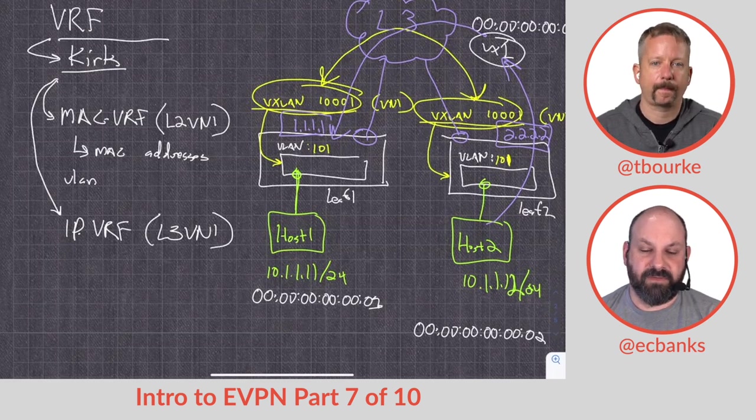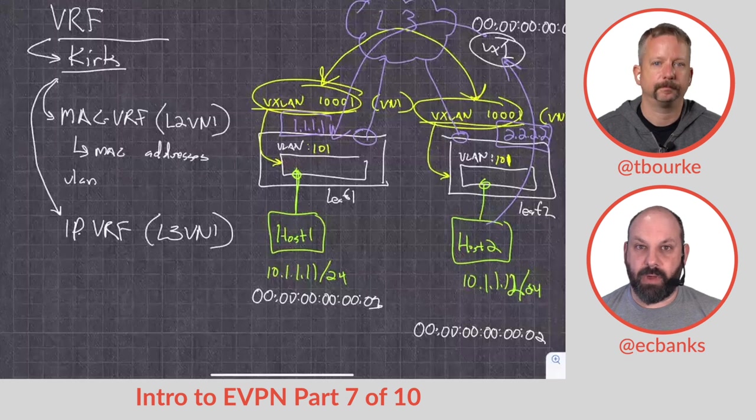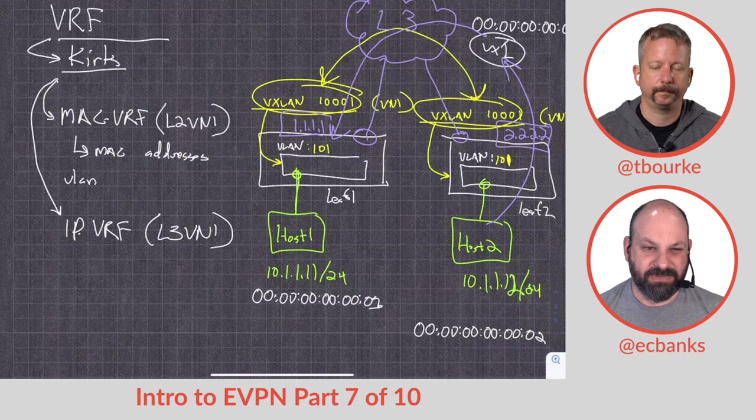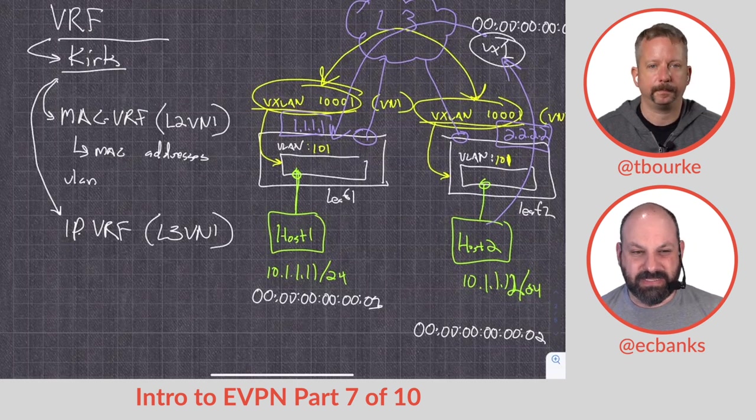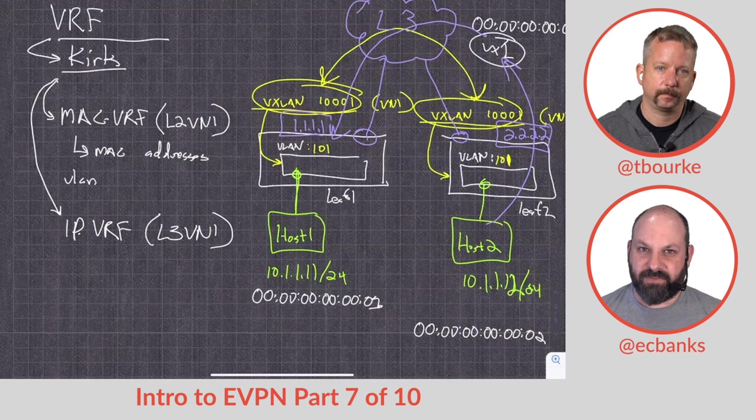You're leaving the default VRF for other things. It kind of reminds me of layer two design with VLAN one. You really don't use VLAN one for anything. This feels like the same sort of concept. We're going to create a VRF, Kirk in this case, and everything's going to live under there. That leaves the default VRF off to the side for, in this case, the underlay.